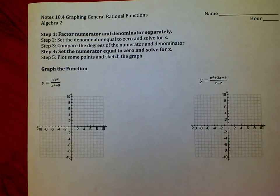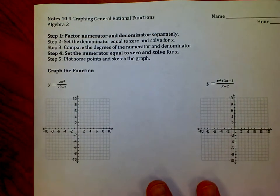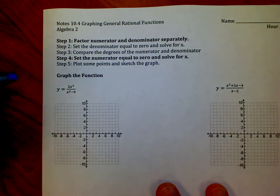Step one is not going to be just to set the denominator equal to zero and solve for x. Now we're going to factor the numerator and denominator separately. We're going to do that before we go any further. So first example, 2x² over x² minus 9.